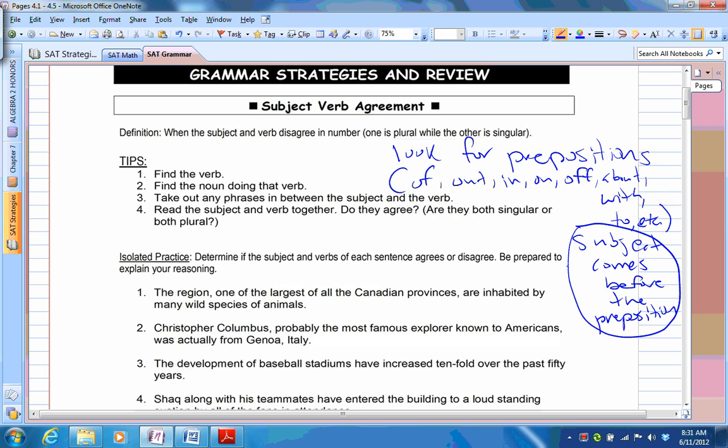So let's look at number one. The region, one of the largest of all the Canadian provinces, are inhabited by many wild species of animals. So they do mention provinces, but when you see the preposition of, and you see that they're talking about a region, and even use the word one as well, so 'are' would not be okay. Because that's singular, so this has to be singular. So we've got to say is. So that's how we would fix it. So obviously there's a disagreement here. They disagree, and it has to be is.